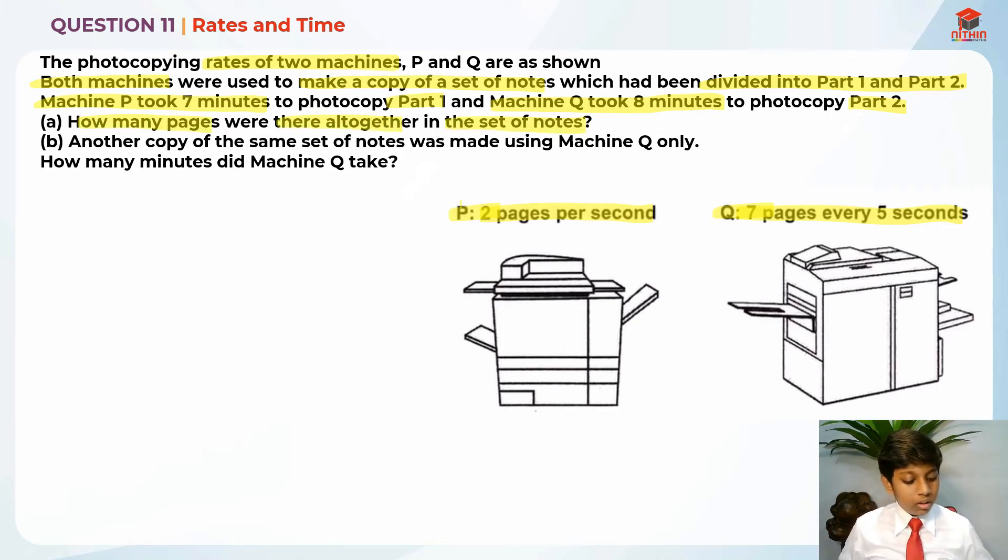So let me highlight the key information. Photocopying rates of two machines, 2 pages per second and 7 pages every 5 seconds. Both machines were used to make a copy of a set of notes which had been divided into part 1 and part 2.